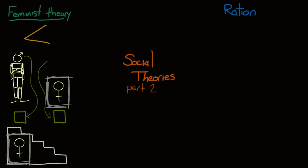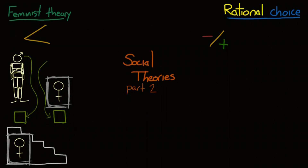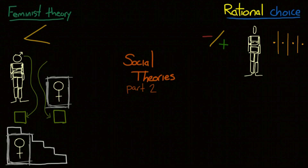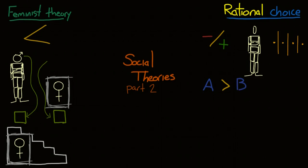Rational choice theory basically states that people always take rational actions, weighing the costs and benefits of each action so that the outcome benefits them the most. A rational choice is part of a pattern of choices that are consistent. Rational choice theory makes three main assumptions. One: completeness — that all actions can be ranked.